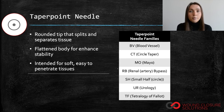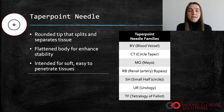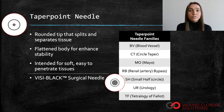Taper point needles are sharp but not quite as sharp as conventional cutting or reverse cutting needles. One taper point subtype includes visi black surgical needles. These are slim taper point needles with a black finish for improved visibility.